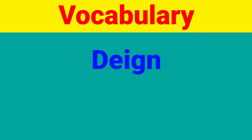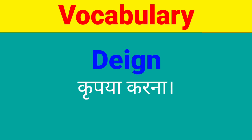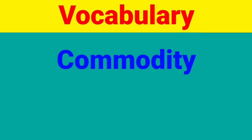Enlarge ka Hindi meaning hai bade akar mein. Next word is 'deign' — D-E-I-G-N. Yahaan pe G silent rahega. Deign ka Hindi meaning hai lipat karna. Next word is 'commodity'. Commodity ka Hindi meaning hai vastu.